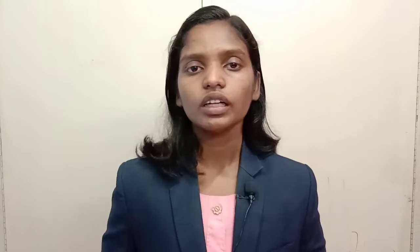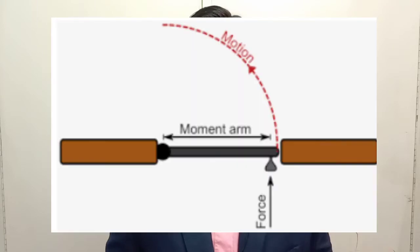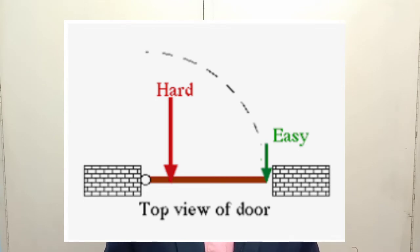Now let's look at real-world examples of torque. The first is opening and closing a door — when we apply force at the handle, which is placed at the farthest distance from the axis of rotation, the perpendicular distance is greater, so less force is needed to turn the door. Another example is the steering wheel — force is applied at the rim so that less force is needed to turn it, because the perpendicular distance from the axis of rotation is maximized.